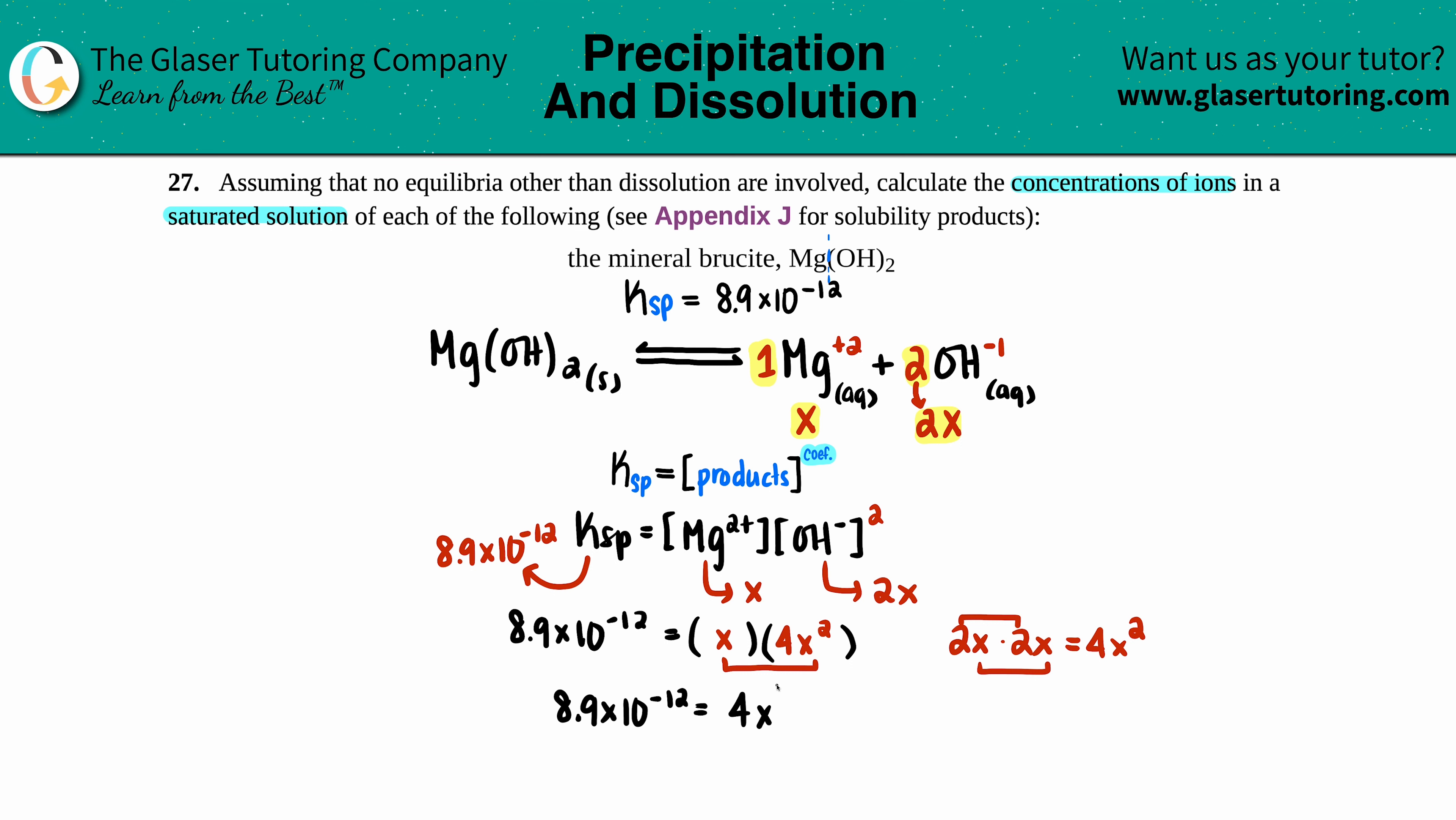Let's solve for x. We should divide by 4 first—that gets rid of this. 8.9 times 10 to the negative 12th divided by 4 gives 2.225 times 10 to the negative 12th, and that equals x³. So all you have to do is take the cube root on both sides. I don't like using cube root; I like to raise it to the inverse value.